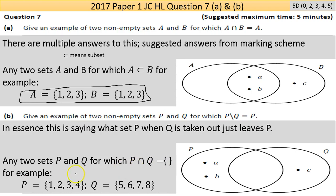So basically any sets you pick where all the entities in Q are different than those in P. So P take away Q leaves you with P itself because nothing gets taken out.